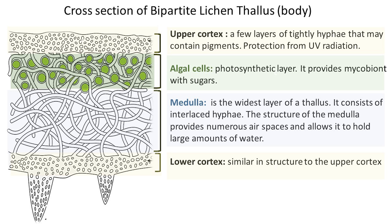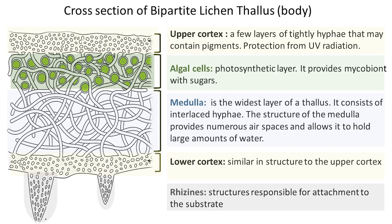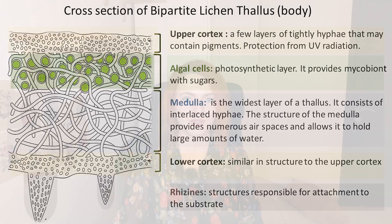The lower cortex is similar to the upper cortex in structure. This layer is oriented toward the surface to which the lichen is attached, and it plays a role in creating attachment structures known as rhizines.